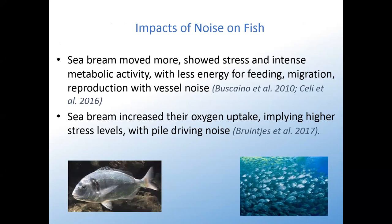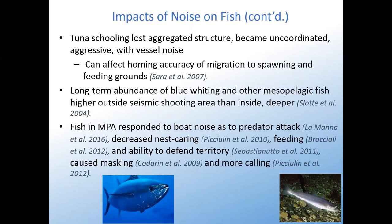Tuna lost their aggregated schooling structure and became uncoordinated and aggressive in the presence of vessel noise. That can affect homing accuracy for migration to spawning and feeding grounds — if you can't find your spawning and feeding grounds, that's going to be a huge problem. The long-term abundance of blue whiting and other mesopelagic fish was higher outside the seismic shooting area than inside, and the fish dropped to deeper depths, showing they were avoiding the seismic shooting both vertically and horizontally.